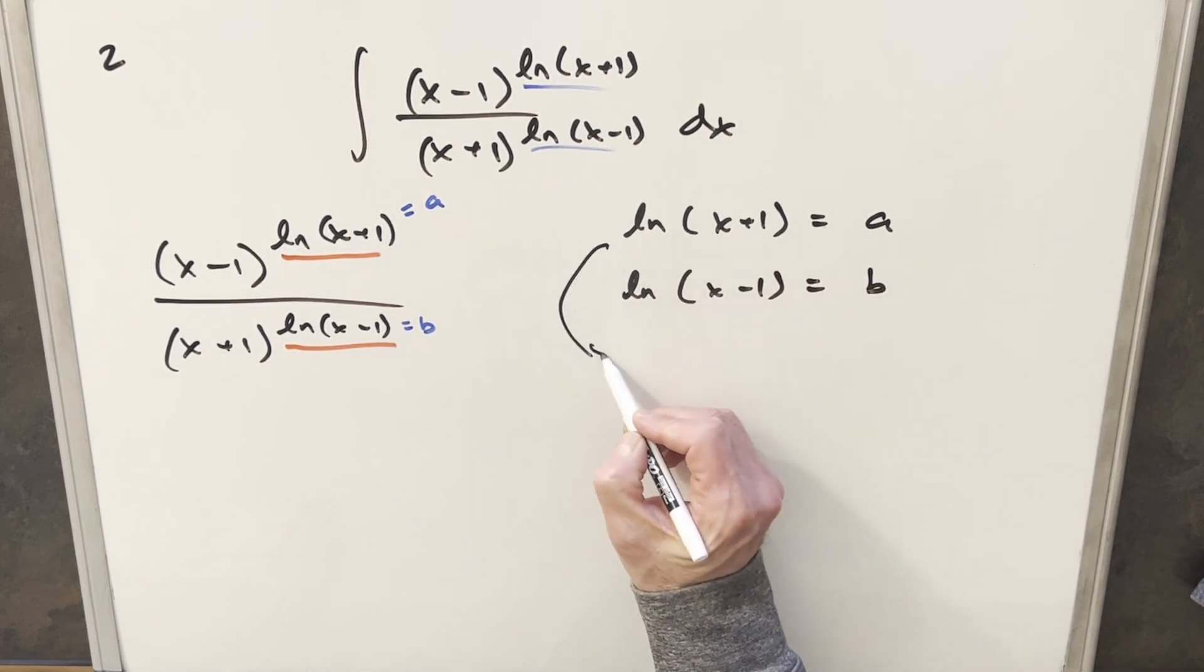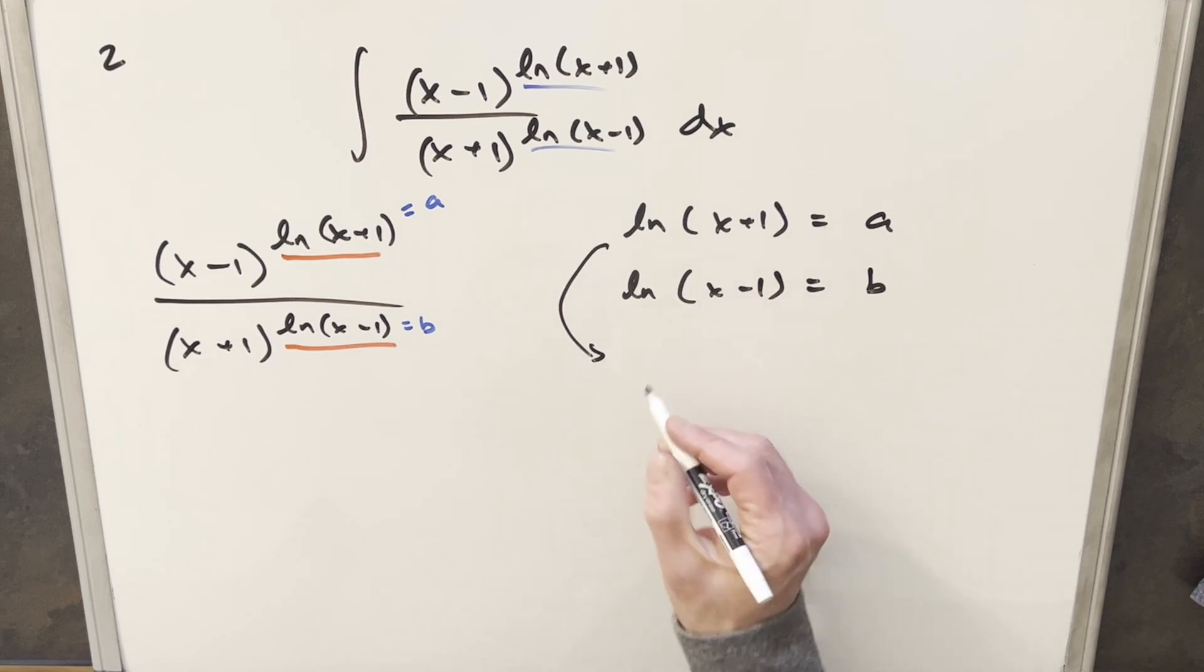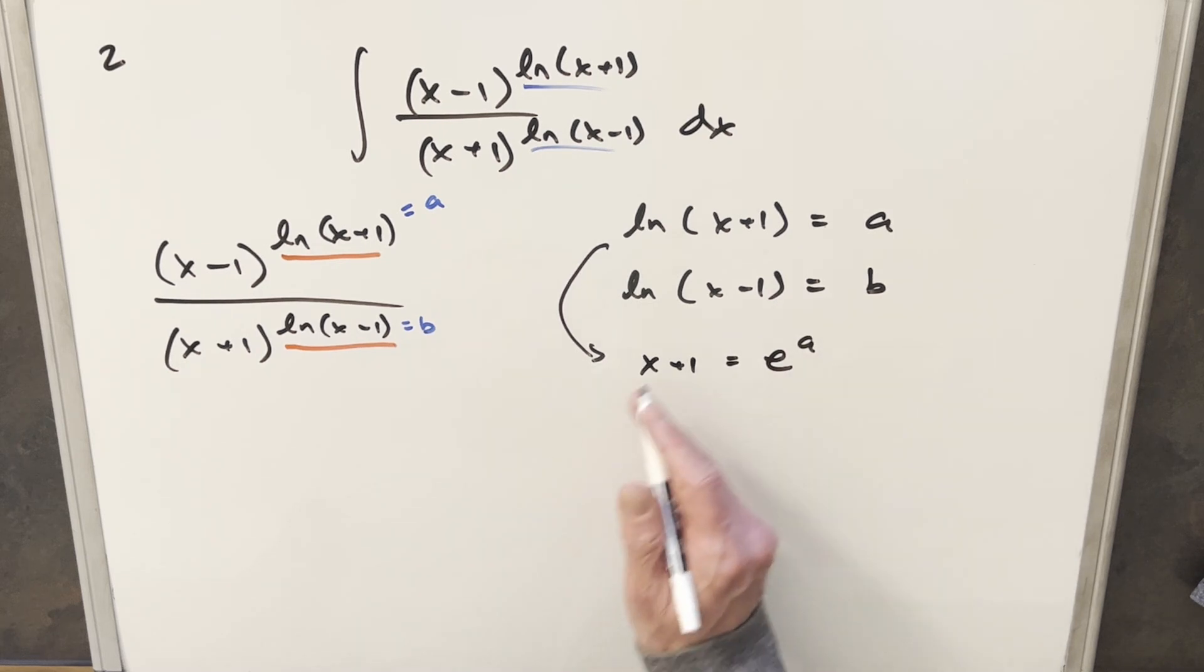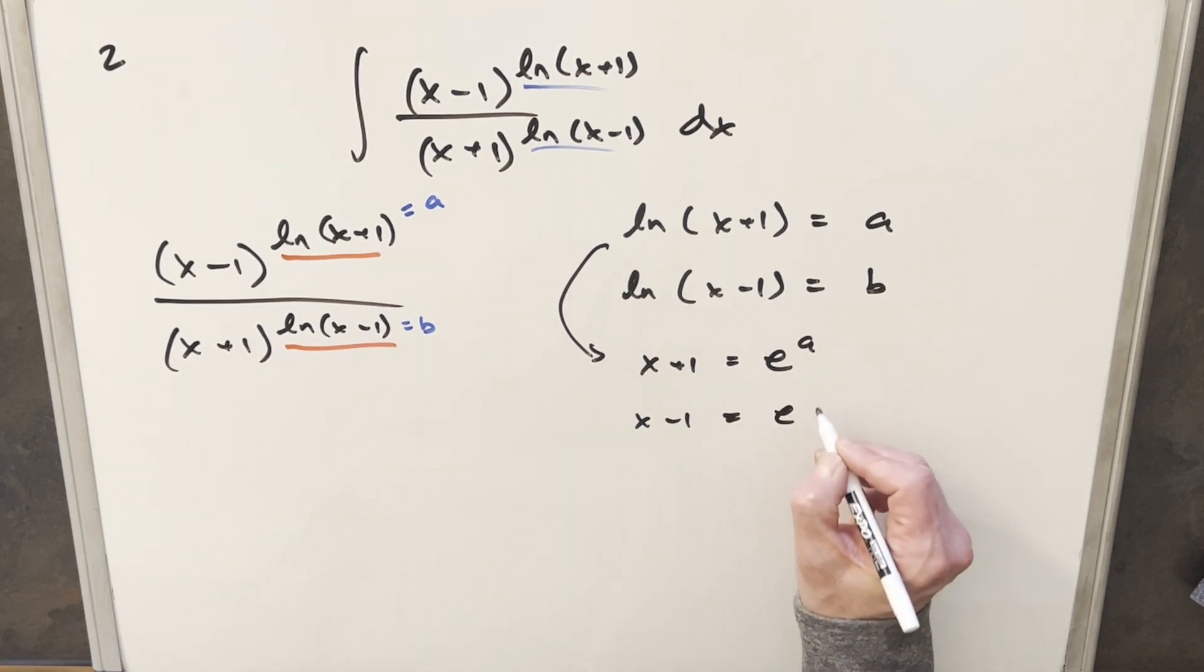Well, with the log properties, I can just rearrange each of these. So I can write x+1 as e to the A. And then here, doing the same thing, isolating x-1, I can say x-1—again, natural log is base e—so I can write x-1 as e to the B.